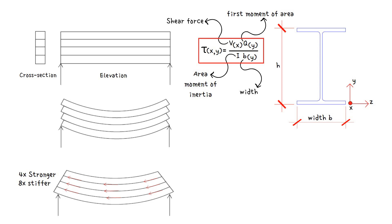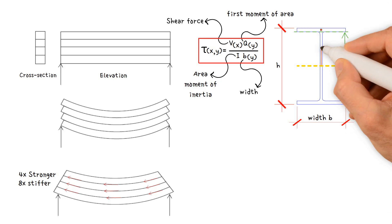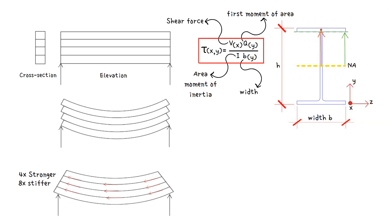Q varies with the distance y above or below the neutral axis. It is equal to the product of the area above the location of interest and the distance between the centroid of that area and the neutral axis. If the point of interest is below the neutral axis, the area below the axis is taken into account rather than the area above it.